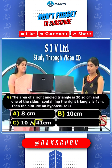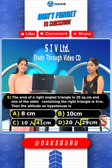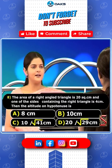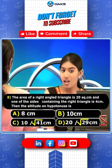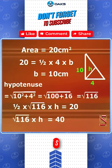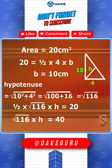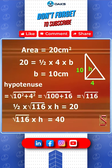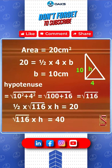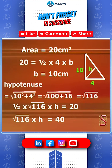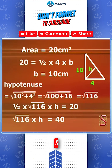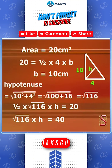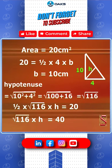20 = (1/2) × 4 × b, therefore b = 10 centimeters. The hypotenuse equals the square root of (10² + 4²), as shown in the figure, which equals the square root of 116.